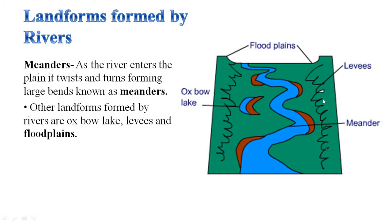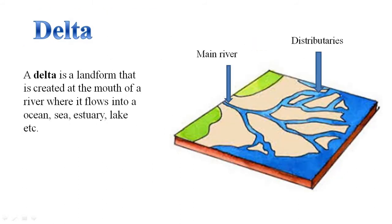The raised banks of a river are called levees. Delta: a delta is a landform that is created at the mouth of a river where it flows into an ocean, sea, estuary, lake, etc. Here the river is distributed into many streams which are called distributaries.